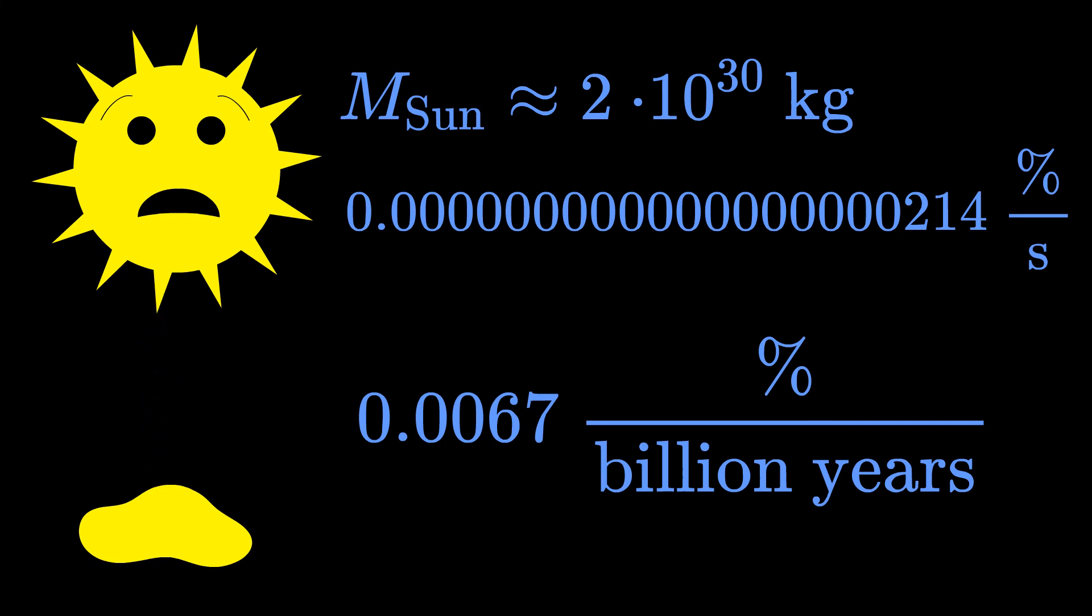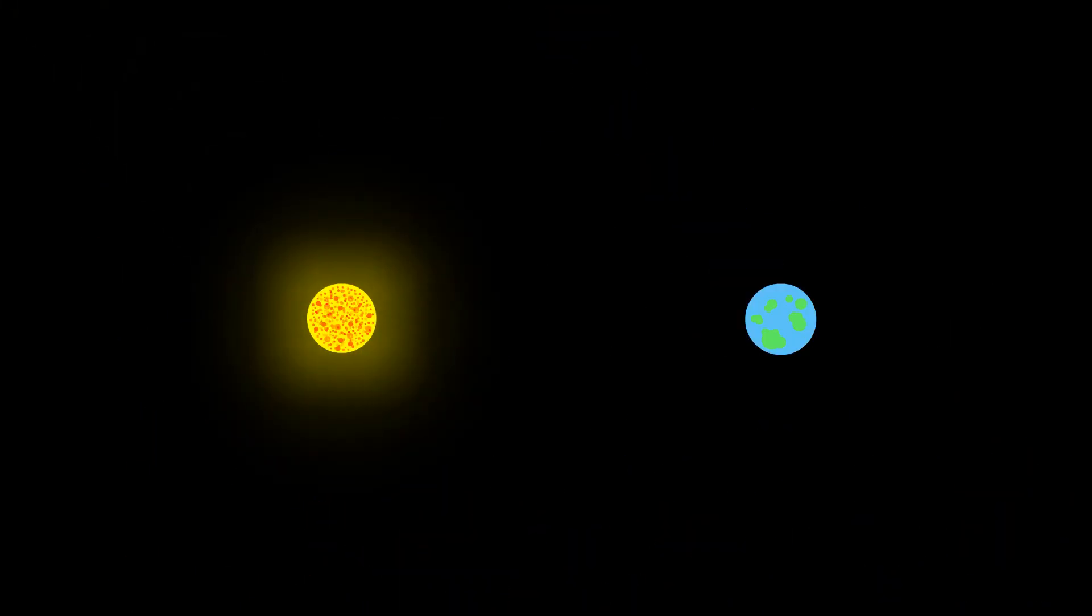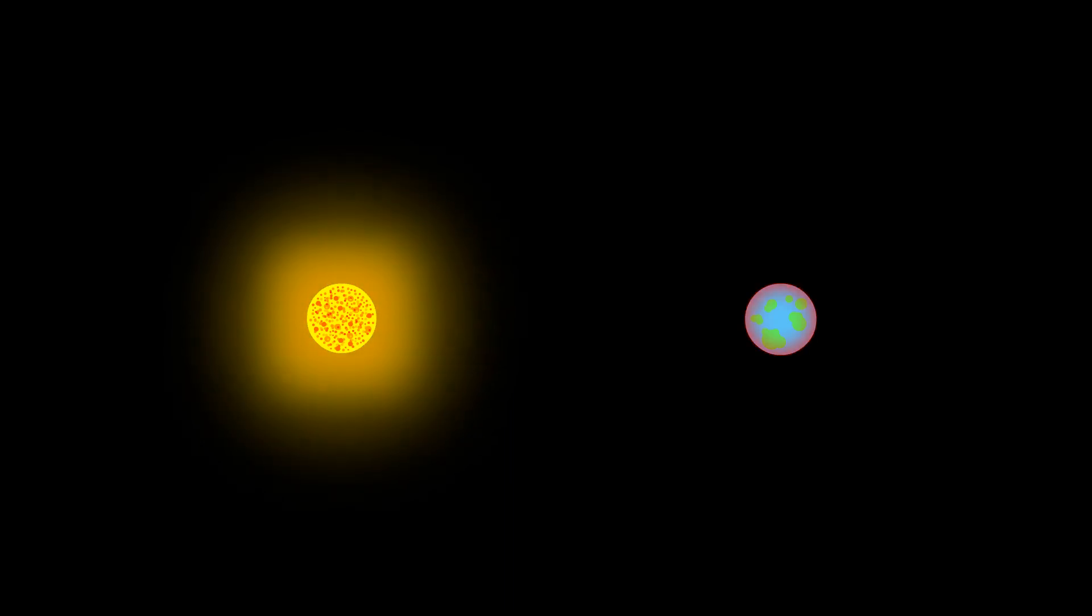So we don't have to worry that our Sun is going to disappear anytime soon. Actually, we have quite the opposite problem. Our Sun is actually increasing in luminosity by about 6% every billion years, which will make life on our planet impossible in about 1.1 billion years.